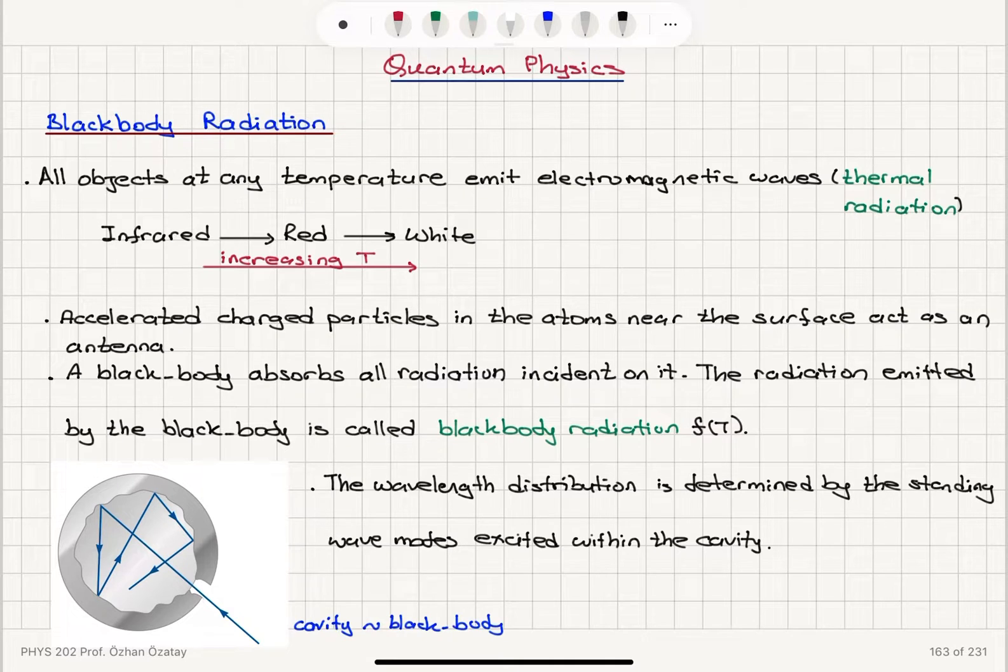So what is a black body? A black body absorbs all radiation incident on it. The radiation emitted by the black body is called black body radiation, and it's a function of temperature.